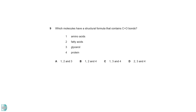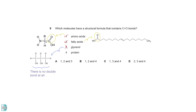Amino acid and fatty acid have a carboxyl group, where the C double bond O is found. Glycerol does not have any double bonds. Protein is composed of amino acids, so it contains C double bond O as well.